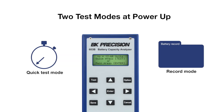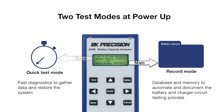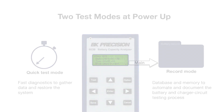The 603B features two test modes. Quick Test Mode, as the name implies, provides fast diagnostics to help technicians gather data and restore the system. The test results are displayed on screen but are not stored in internal memory. Record Mode uses the 603B's internal database and memory to automate and document the battery and charger circuit testing process.